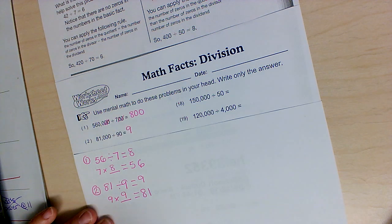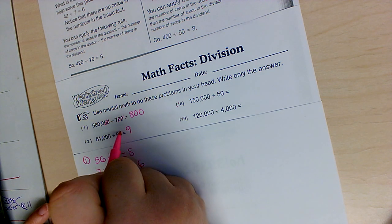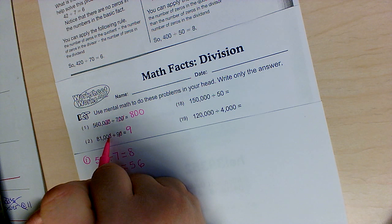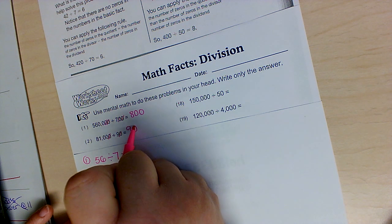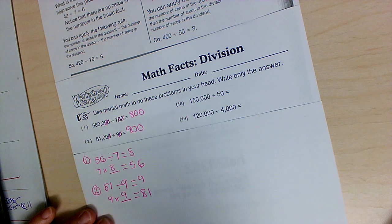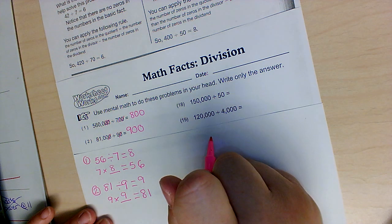So I know this is going to start with 9, and I cross my zeros, and I go over here and cross one off. I have 2 left. My answer is 900.